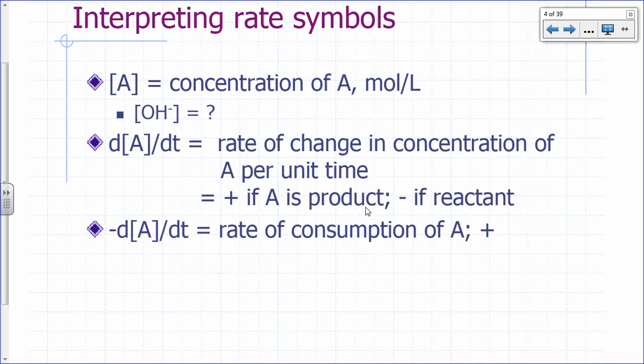Interpreting rate symbols. A symbol in brackets means concentration in moles per liter. So hydroxide in brackets is the concentration of hydroxide ions. The derivative of concentration with respect to time is the rate of change in the concentration of A per unit time. The unit for that would be moles per liter per second.